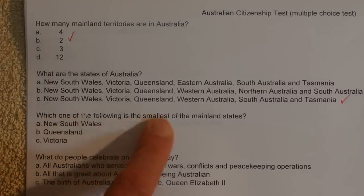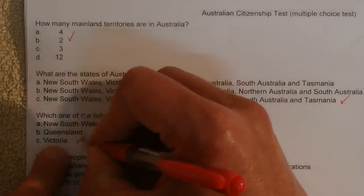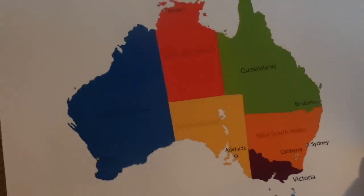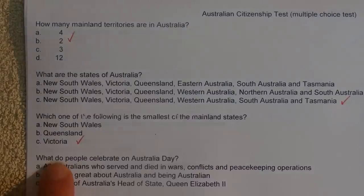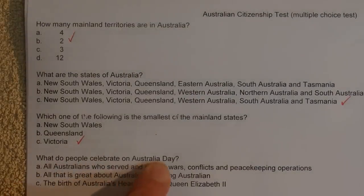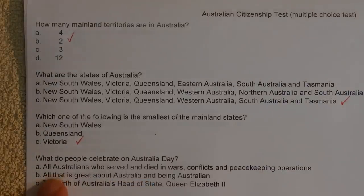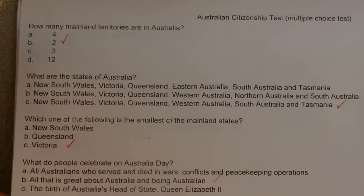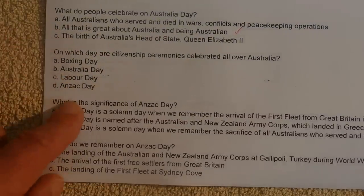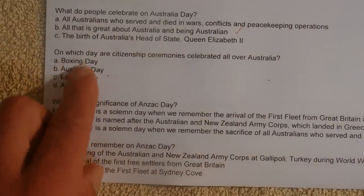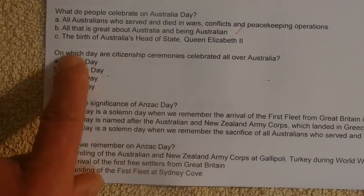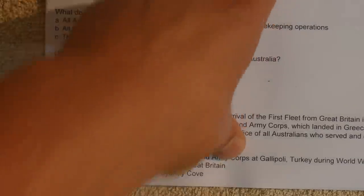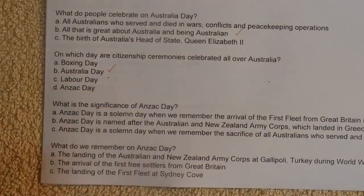Which one of the following is the smallest of the mainland states? Victoria is the correct answer — that small piece in the south. What do people celebrate on Australia Day? They celebrate all that is great about Australia and being Australian. On which day are citizenship ceremonies celebrated all over Australia? Answer B: on Australia Day, the 26th of January.